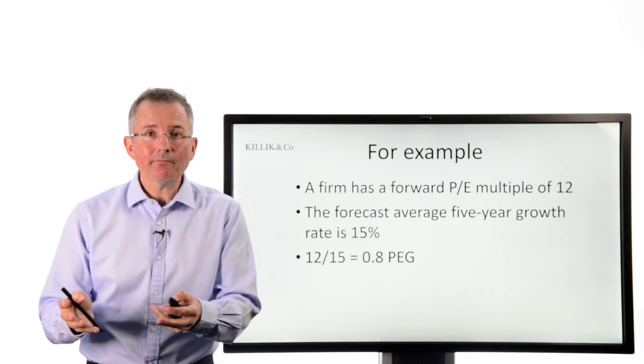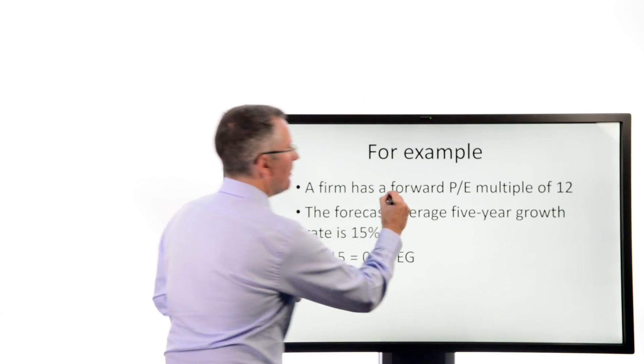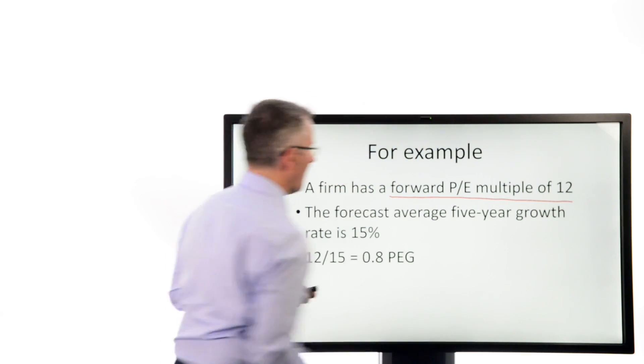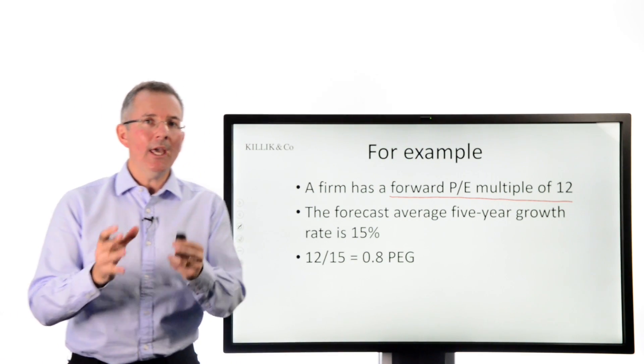So, for example, I gave you one. Here's another. A firm has a forward PE multiple of 12. The forecast average five-year growth rate is 15%. Now, here we're getting into the mechanics. What PE multiple do you use?